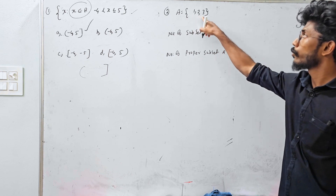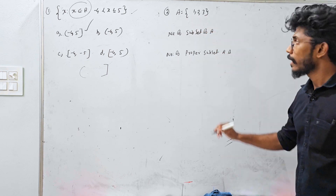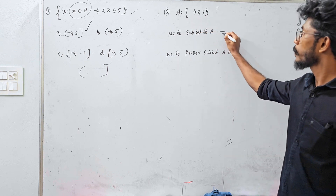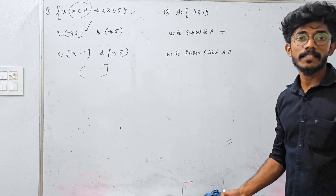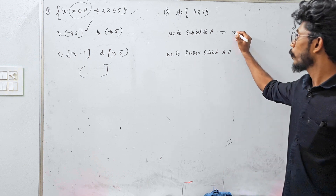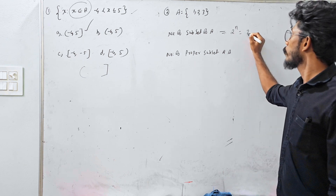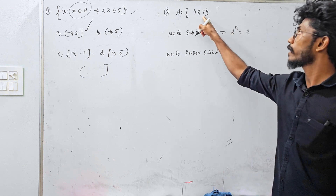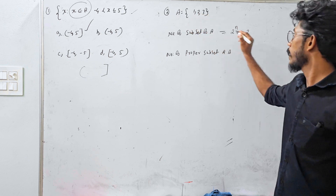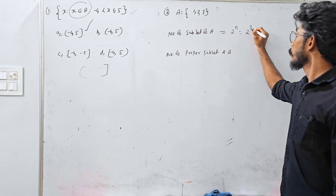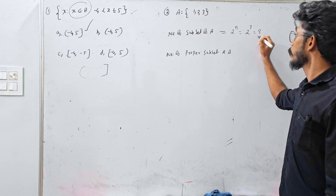Set A has 3 elements. Number of subsets of A is 8 subsets. Formula: 2 raised to N. Here, N equals 3, so 2 raised to 3 equals 8.